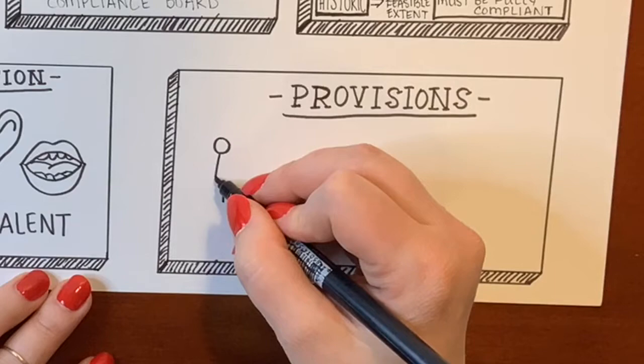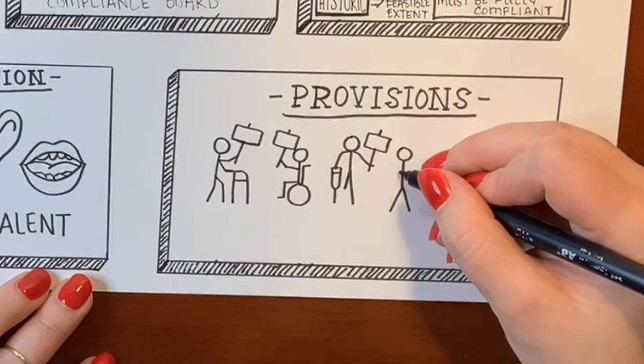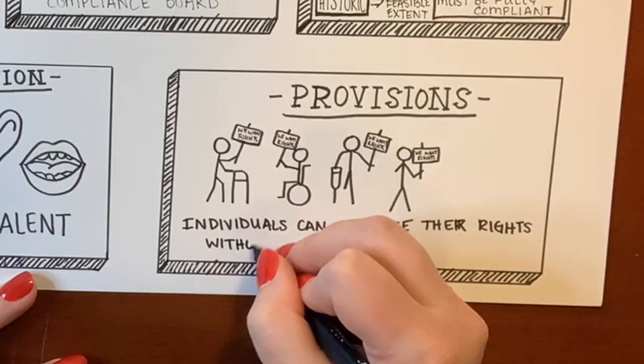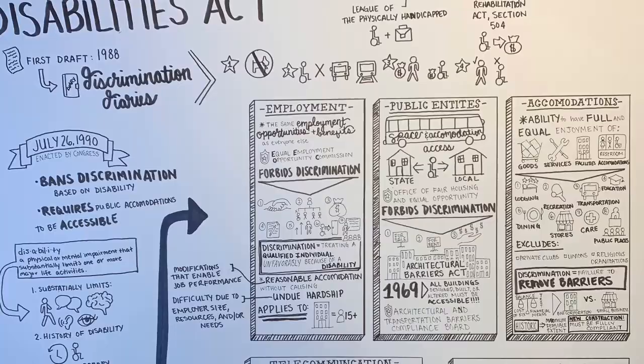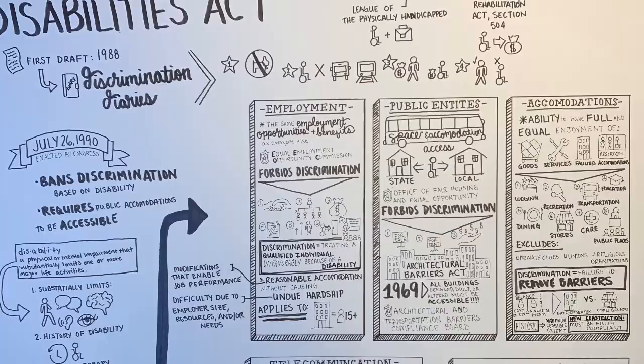Title V is entitled Provisions, which essentially ensures that people who exercise their rights under the ADA, or assist others in exercising their rights, are protected from retaliation from anybody else. And that is the Americans with Disabilities Act in a nutshell.